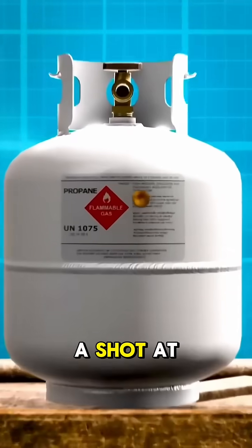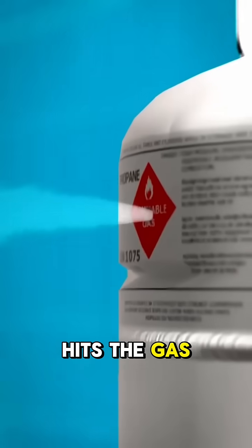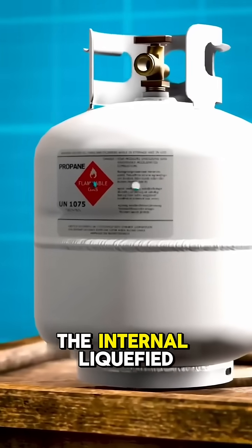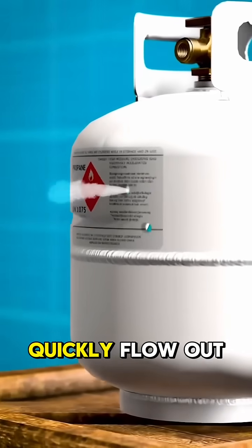So what happens if you fire a shot at a gas can? When the bullet hits the gas can at a very high speed, the can will be pierced in an instant. The internal liquefied oil gas will quickly flow out of the hole.